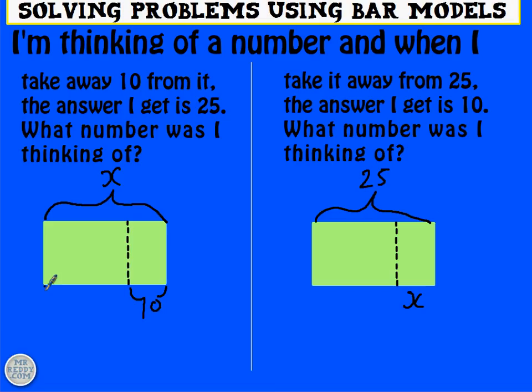Over here, the answer that you get when you do the subtraction is 25. And over here, the answer you get when you do the subtraction is 10. So slightly different and that's why we've got slightly different bar models and a slightly different way of working out the answer.